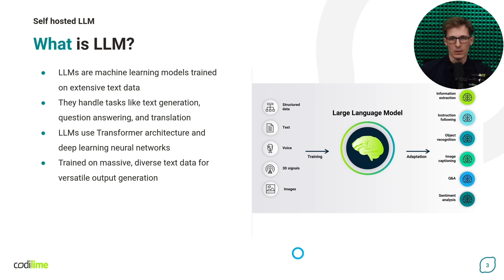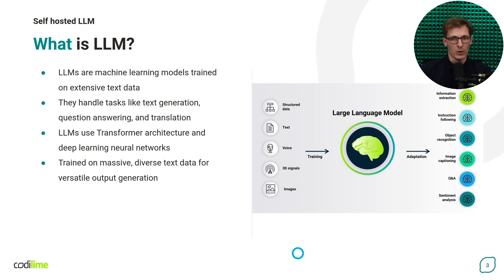Smaller, more specialized models were successfully used for quite some time. For example, BERT architecture for NLP has been in widespread use since 2018-2019. What causes the recent hype around LLMs is the fact that these models, simply due to their size, are extremely versatile. The same model captures knowledge about ancient history and about modern programming languages, and is able to suggest marketing campaigns and reformulate text towards a formal tone.